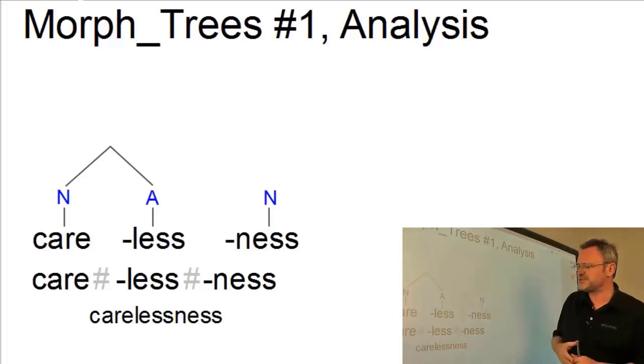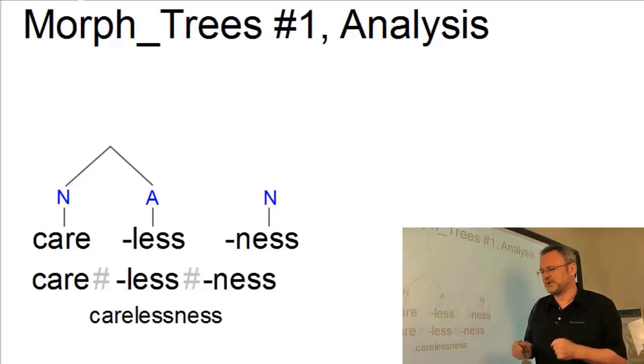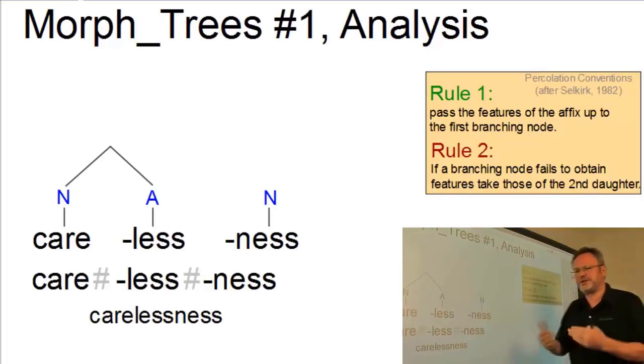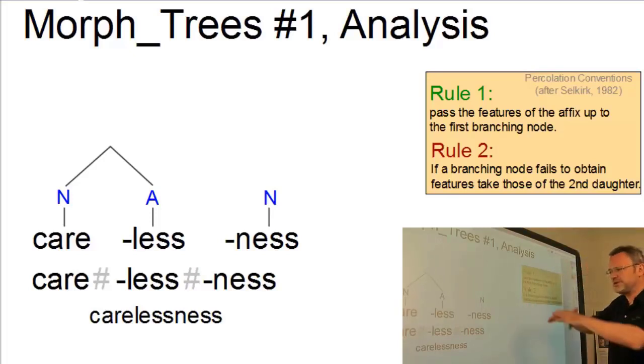And now we have to think about a syntactic feature—that is, the category that is assigned to the new mother node. To do this, we have the percolation conventions that were defined in the 1980s by Liz Selkirk. Here they are. Rule one: pass the features of the affix up to the first branching node. And rule two: if a branching node fails to obtain features, then we take the features of the second daughter of this new mother node.